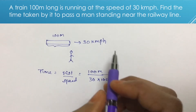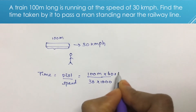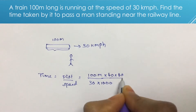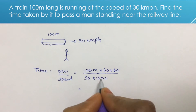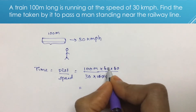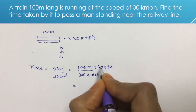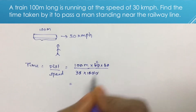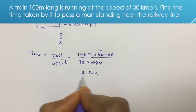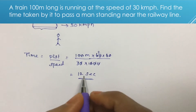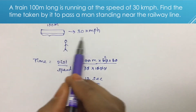Solving this, we get 12 seconds. So the train crosses the man in 12 seconds.